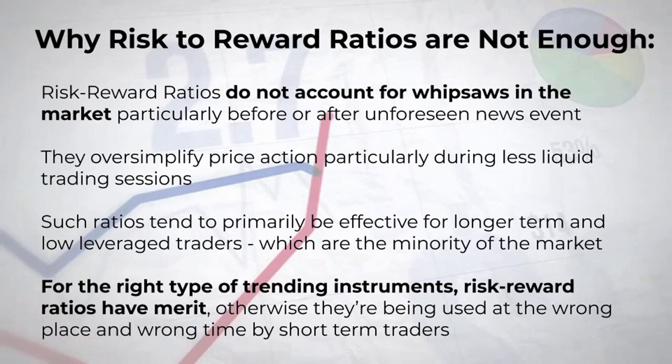Now we understand how to use reward-to-risk ratios in real markets. However, where can it go wrong? Why are risk-to-reward ratios sometimes not enough, and what else do we need to consider? Markets in 2020 are very volatile. The first drawback is that risk-to-reward ratios do not account for whipsaws in the market, particularly before or after unforeseen news events.